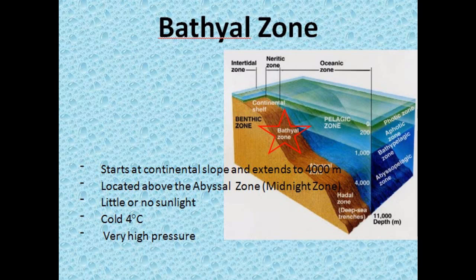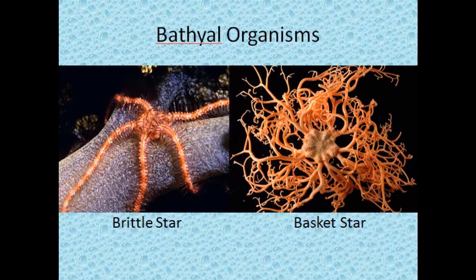The next benthic zone is the bathyo zone. The bathyo zone starts at the continental slope and extends down 4,000 meters. It's located above the abyssal or midnight zone. There's little or no sunlight in the bathyo zone, and it gets as cold as 4 degrees Celsius, along with very high pressures. Some bathyo organisms include the brittle star and basket star.